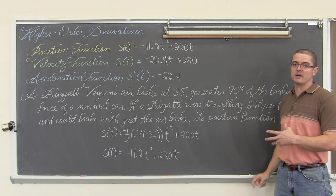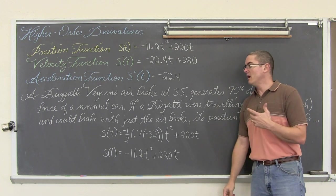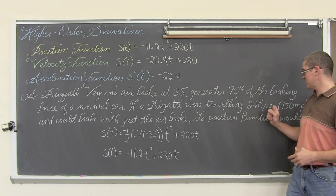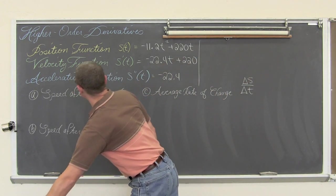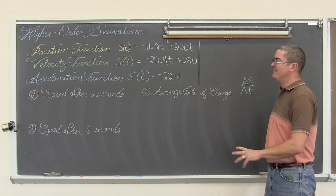We are accelerating or decelerating at 22.4 feet per second per second because that is how the problem was initially set up. So our acceleration is a constant value so I am not going to do any examples on that.